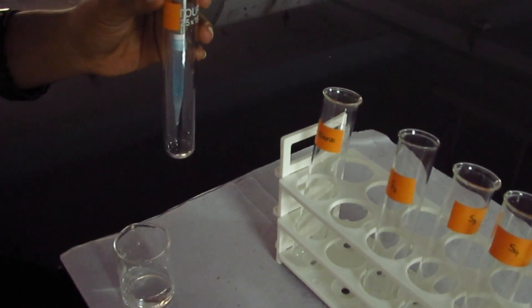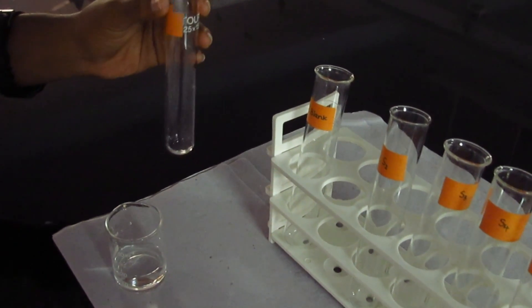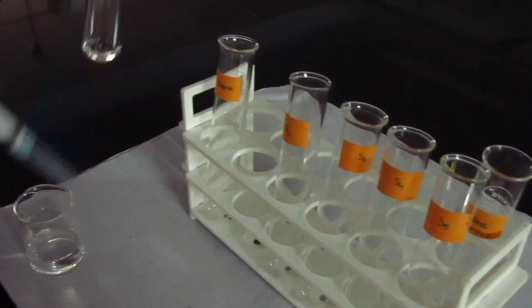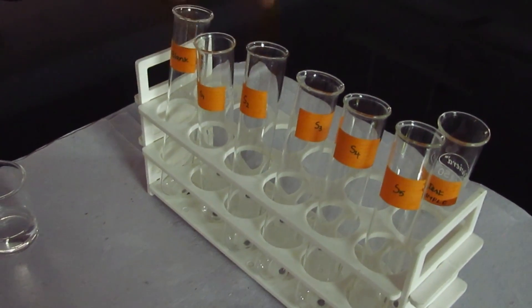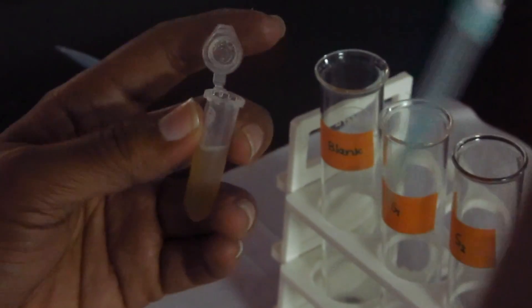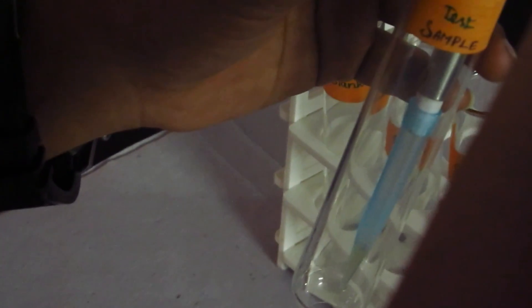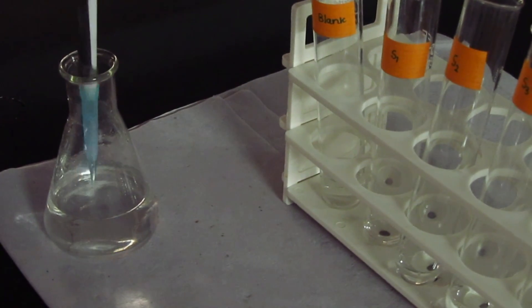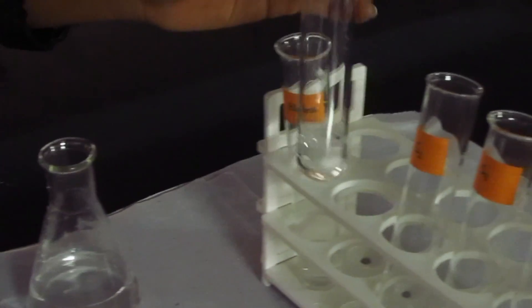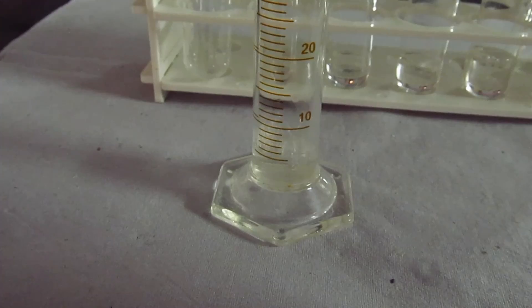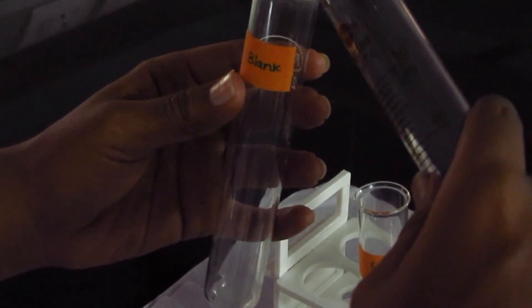Pipet out 2ml, 4ml, 6ml, 8ml and 10ml of working standard into a series of test tubes. Pipet out 0.1ml of sample into other test tubes. Make up the volume to 10ml in all test tubes using distilled water. A tube with 10ml of water serves as a blank.